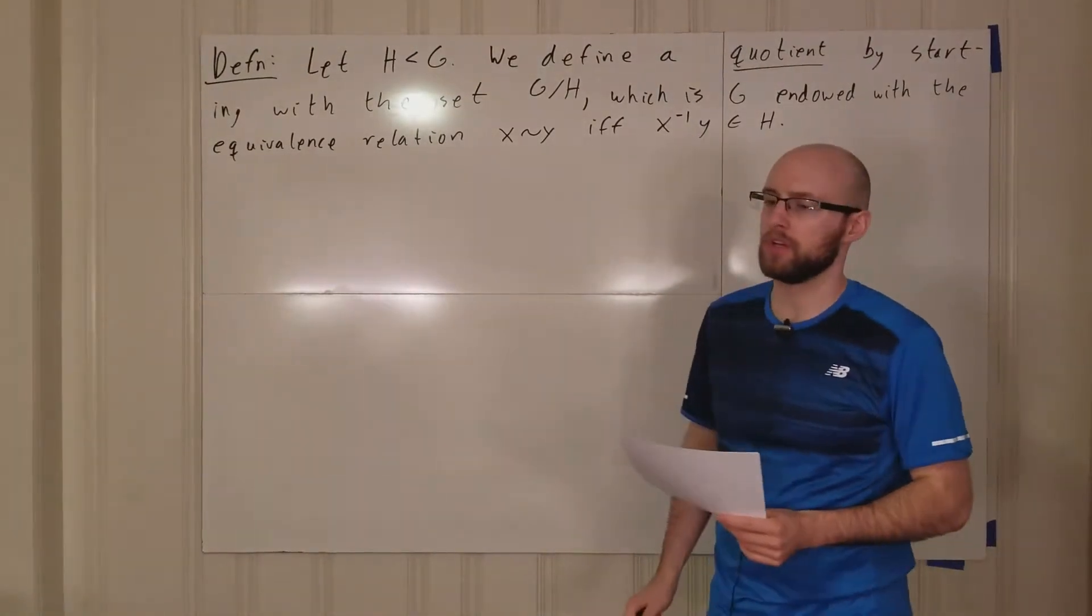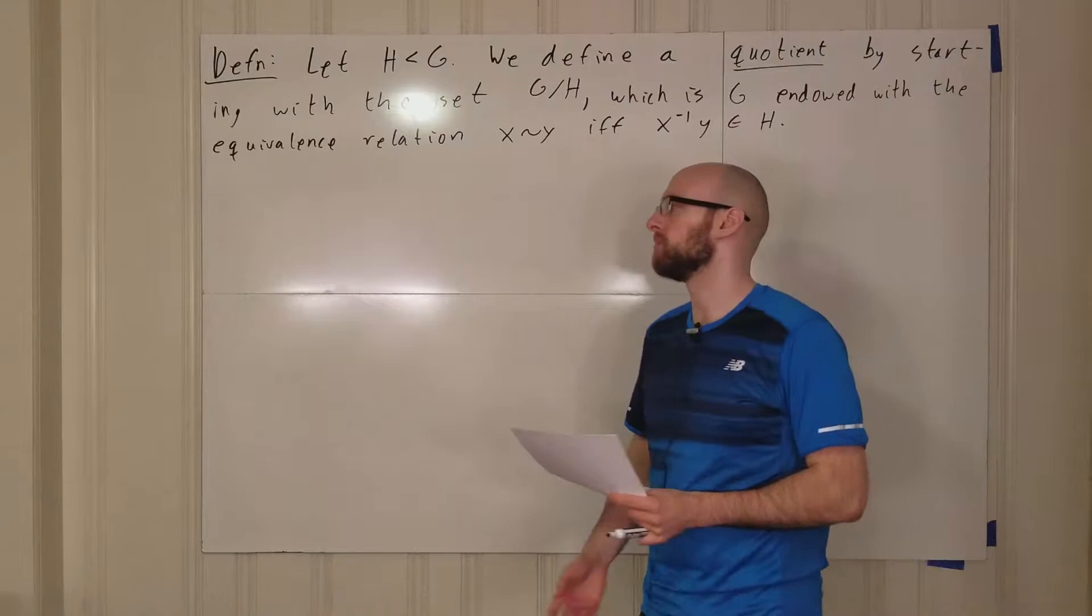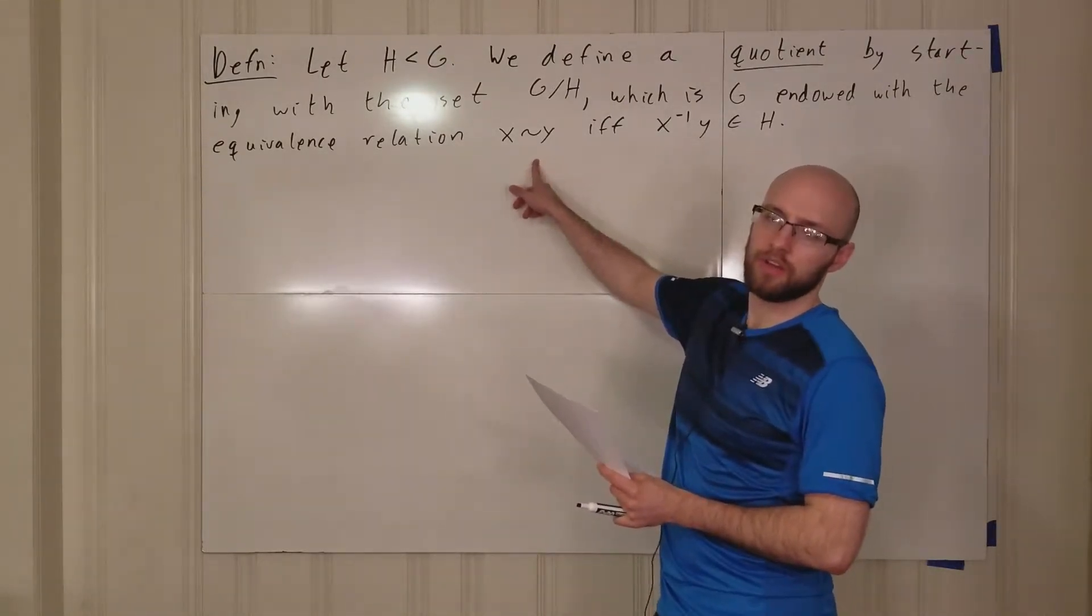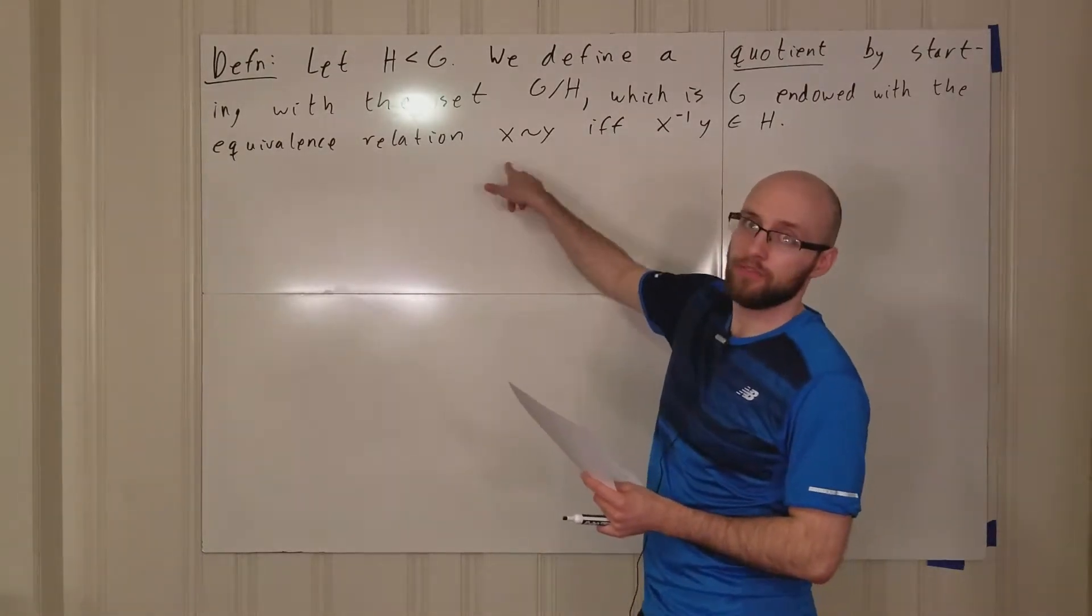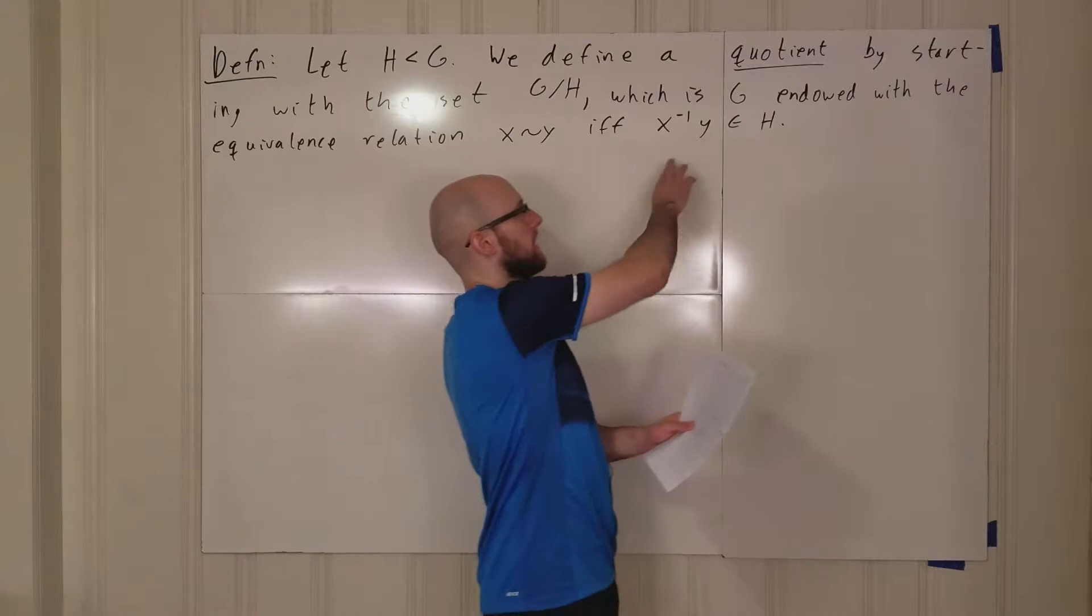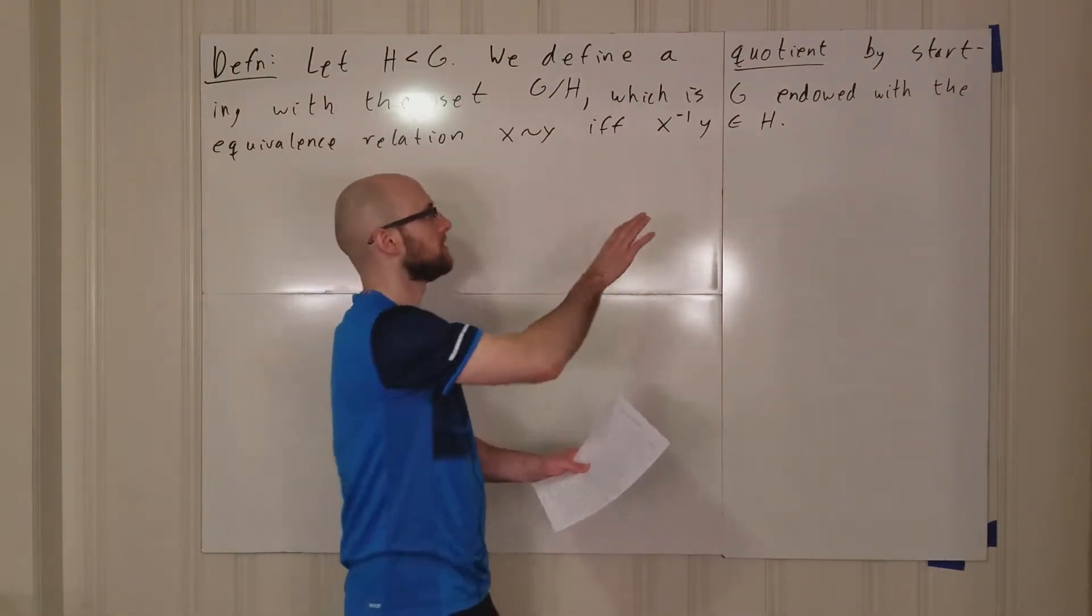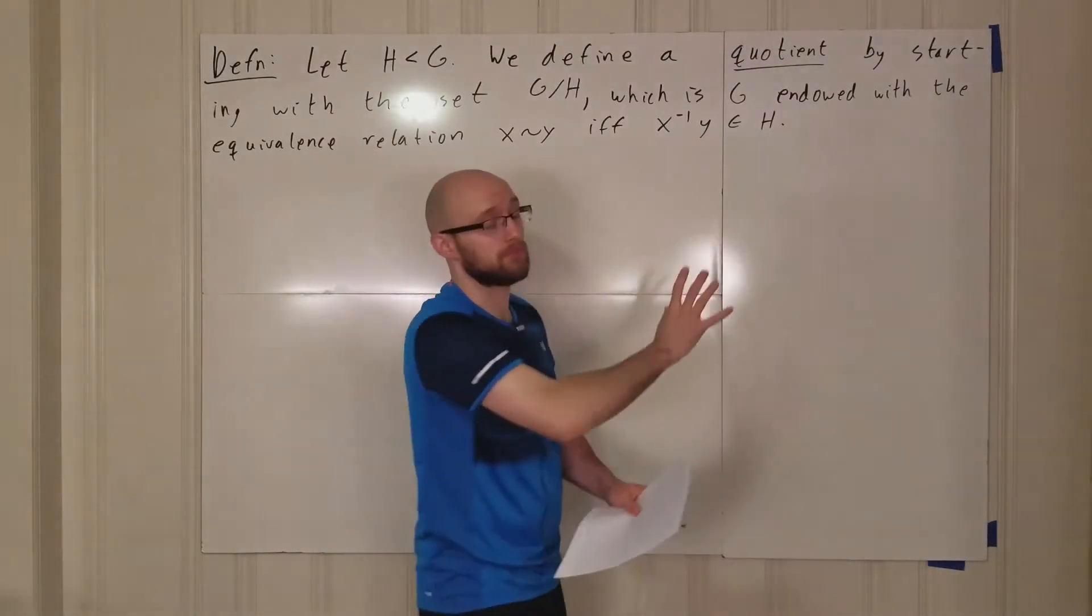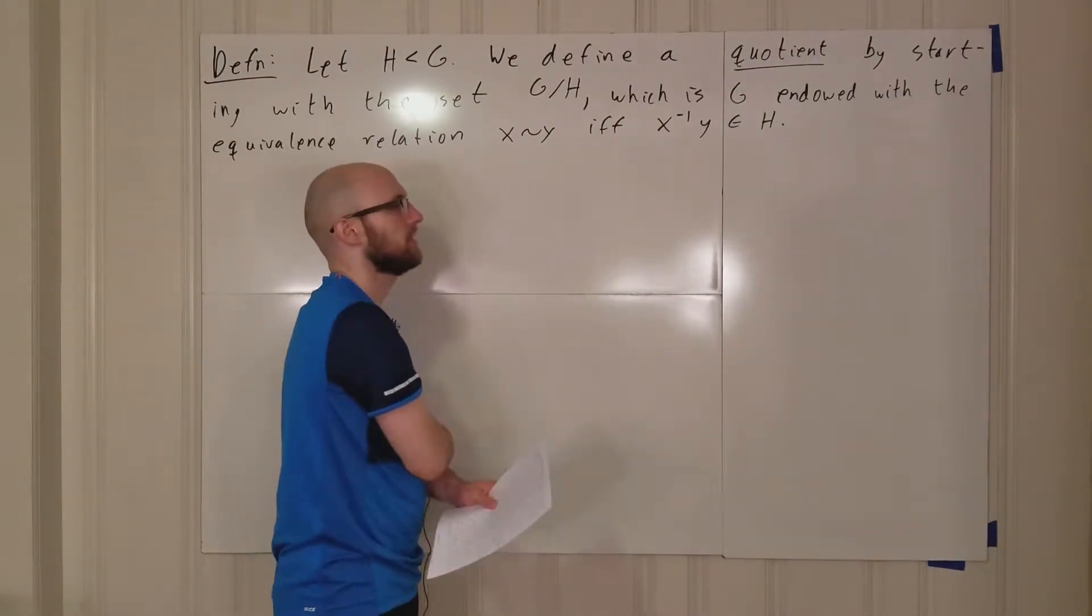For symmetry or reflexivity, we want x is equivalent to y if and only if y is equivalent to x. That's true because x is equivalent to y if and only if x inverse y is in H, but H is a subgroup so it's closed under taking inverses. The inverse of x inverse y is in H, but the inverse of x inverse y is y inverse x.